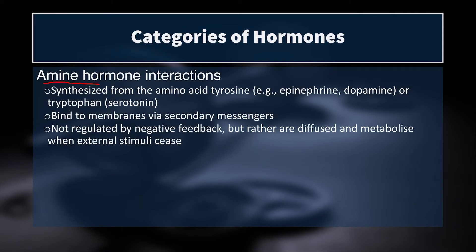Finally, we have amine hormones. These are synthesized from the amino acid tyrosine or tryptophan and include hormones like epinephrine, dopamine, and serotonin — they bind to membranes via second messengers. These are not regulated by negative feedback. All the other hormones we've spoken about are subject to negative feedback — as the body senses their buildup, it shuts down its own production. This is one reason why if you take exogenous hormones like testosterone, your body starts to shut down its own production. But epinephrine, dopamine, and serotonin don't function on this negative feedback loop — they can stay elevated for quite some time.